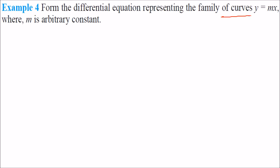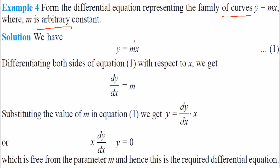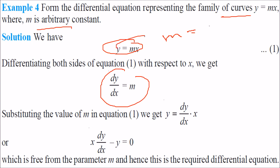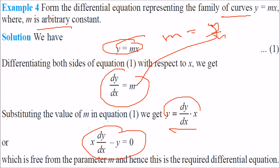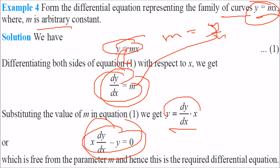Form the differential equation representing the family of curves y equal to mx, where m is the arbitrary constant. We have y equal to mx, so dy by dx is m. Now m is simply y by x. Put it here: dy by dx equal to y by x. Rearranging, x dy by dx minus y equal to 0. Just differentiate it once and place the value of m. This is the differential equation of the family of curves y equal to mx.